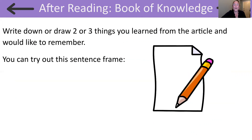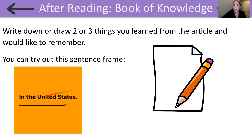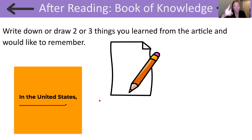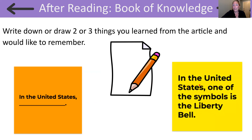All right, readers. Now that we have completed reading about three symbols, I want you to write down or draw what you learned from this article that you would like to remember. You may want to try out this sentence frame: In the United States... Take a minute and pause the video and jot down what you learned now. Hopefully you learned some interesting facts that you jotted down in your book of knowledge. I also jotted down something — I wrote: In the United States, one of the symbols is the Liberty Bell.